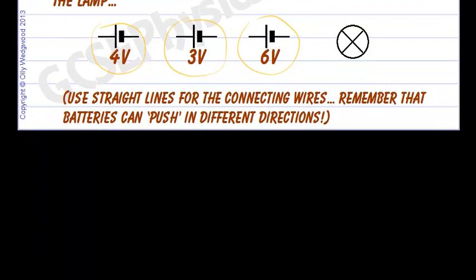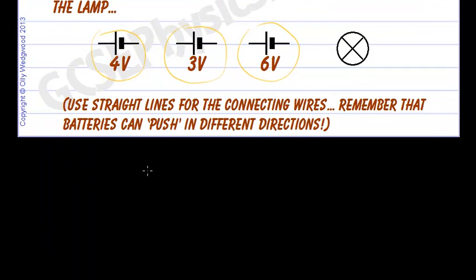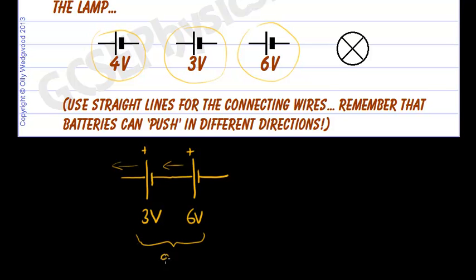So, for example, if we were to put a 3 volt cell—3 volts, the positive side is the bigger side, remember—in series with a 6 volt cell, they're both pushing in the same direction. Current will flow from the positive, and so they will add up their voltages, so this would be 9 volts.